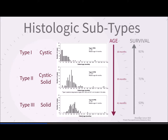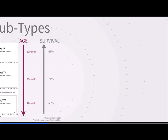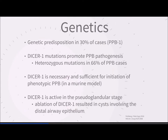There is an interesting genetic component to pleuropulmonary blastoma, with genetic predisposition in up to 30% of cases — otherwise known as PPB1. DICER1 has been shown to promote PPB pathogenesis, with heterozygous mutations in 66% of PPB cases. DICER1 is necessary and sufficient for initiating a phenotypic PPB in a murine model, and is active in the pseudoglandular stage, where its ablation leads to cysts involving the distal airway epithelium, mimicking early cysts seen in PPB.